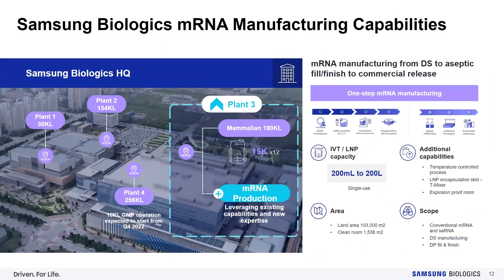Let me explain our manufacturing capability at Samsung Biologics. Our mRNA plant is located in Songdo, Incheon, South Korea. We offer one-stop mRNA manufacturing from conventional mRNA and siRNA manufacturing, LNP formulation, and drug product fill and finish. Our IVT and LNP capacity ranges from 200 ml to 200 liters, so we can accommodate very small-scale manufacturing as well under a single-use system. We have temperature-controlled processes for lipid solution preparation and IVT, a T-mixer for GMP manufacturing of LNP encapsulation, and since we use ethanol, we have an explosion-proof room to ensure process safety.